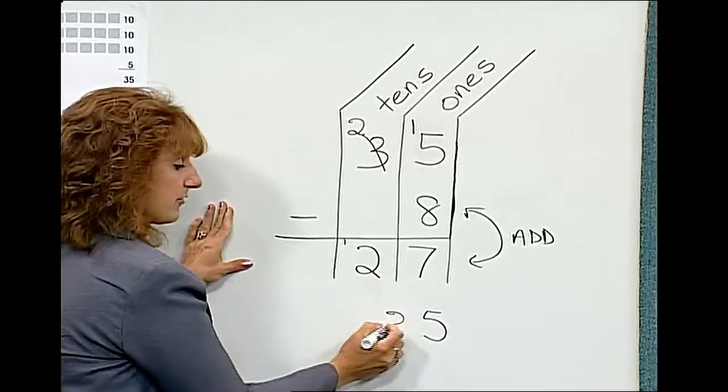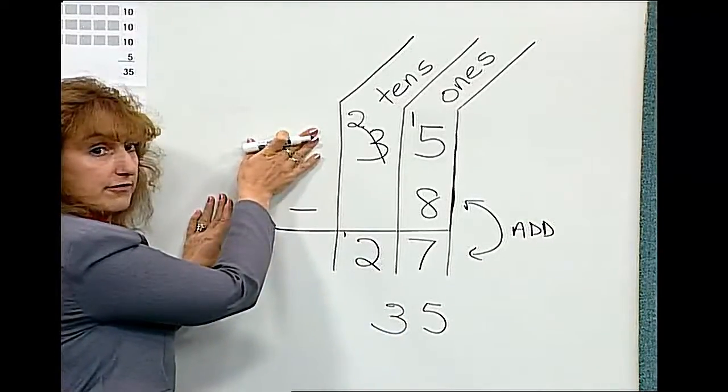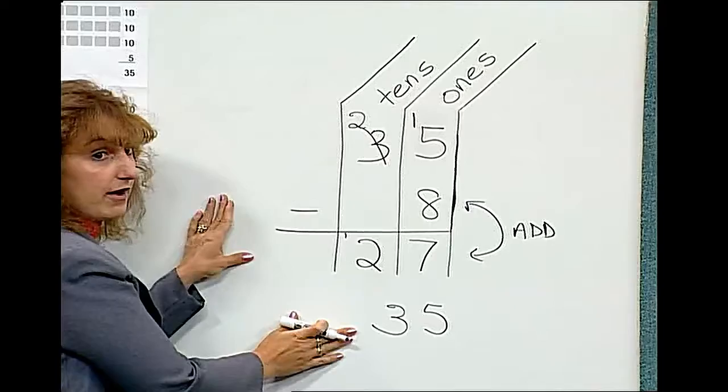One plus two is three. We have checked our answer. We started with thirty-five, we're now ending with thirty-five.